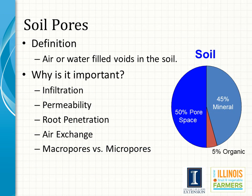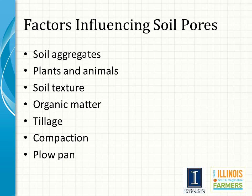Soil structure is important because it's closely correlated with the amount of open pore space in the soil. It's in those pores where water moves and air flows, and as a result where roots can also grow. The porosity of the soil is very closely related to soil quality. There are many factors that influence the size, shape, and distribution of pores. Soil aggregates are one — the granular structure in the topsoil creates a lot of pore space in the A horizon, while the larger blocky structure in the subsoil creates less pore space.